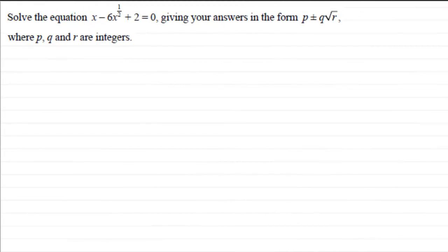Hi, now in this question what we've got to do is solve the equation x minus 6x to the power half plus 2 equals 0, giving you answers in the form p plus or minus q multiplied by root r where p, q, and r are integers.